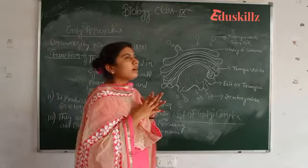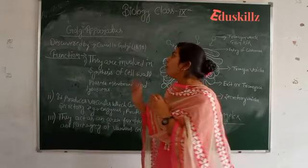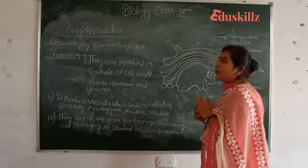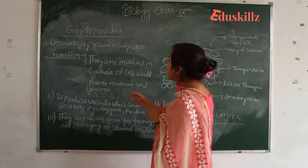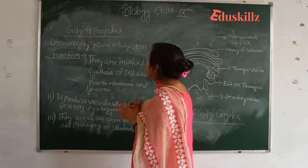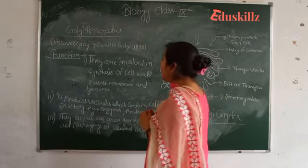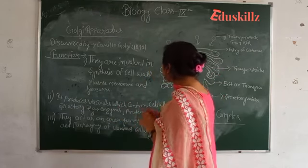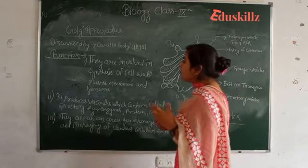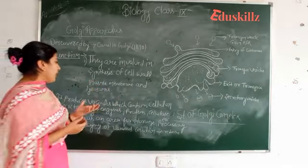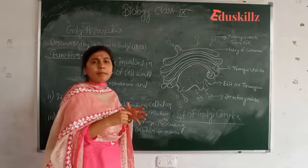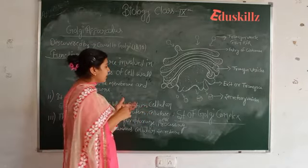Now we are discussing the functions of the Golgi apparatus. There are many functions of the Golgi apparatus. First, they are involved in the synthesis of the cell wall and lysosomes — they are involved in those particular cell organelle syntheses. It produces vesicles which contain cellular secretory enzymes; proteins and materials are formed within these vesicles.